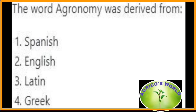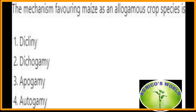The word agronomy was derived from the Greek language: agros means field, nomos means to manage. The mechanism favouring maize as an allogamous crop species is dichogamy. Dichogamy is a mechanism in which the male and female reproductive organs are in separate flowers, but both male and female flowers are located on the same plant.